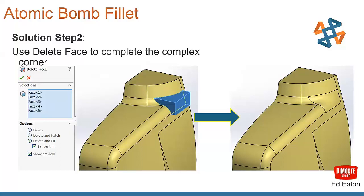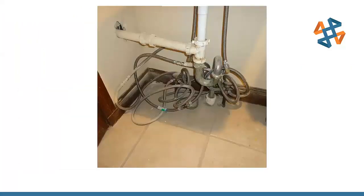We tell it to do instead of delete and patch, we tell it to do a delete and fill with a tangent fill. And you can see the results on the right-hand side there. It does a nice, clean transition between those two items there and gives us a nice, tight corner that we're looking for. A lot better at that point.